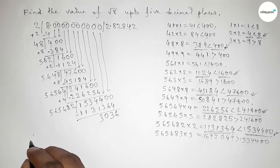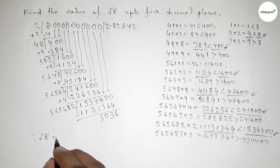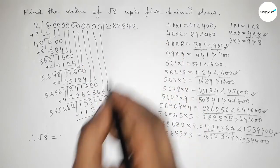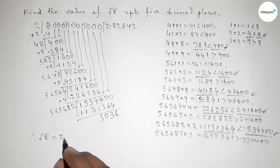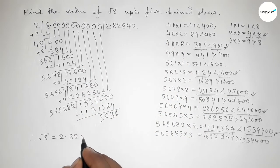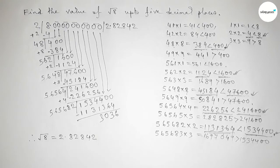Therefore, the value of root 8 up to 5 decimal places is 2.82842. Thanks for watching. If this video is helpful to you, please share it with your friends. Thanks for watching.